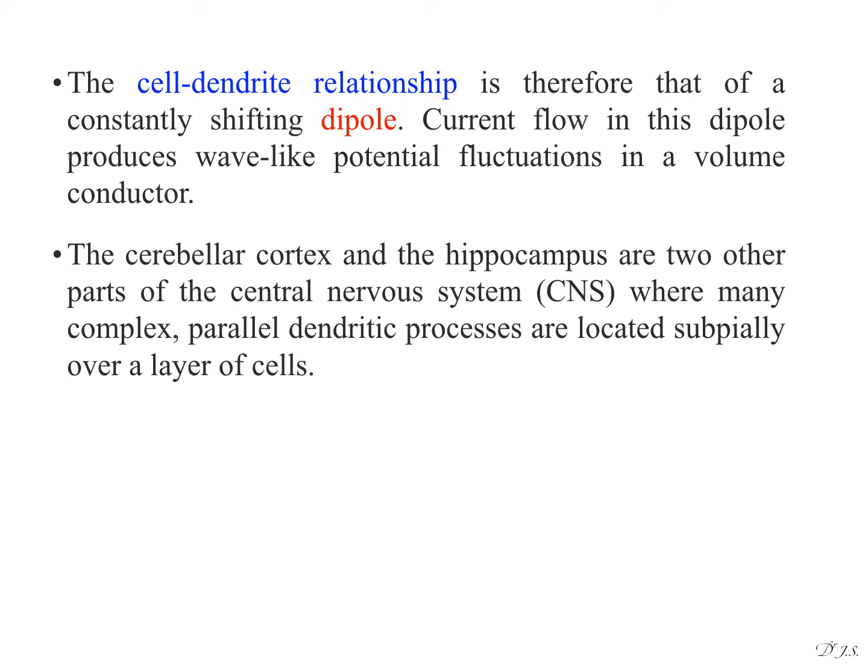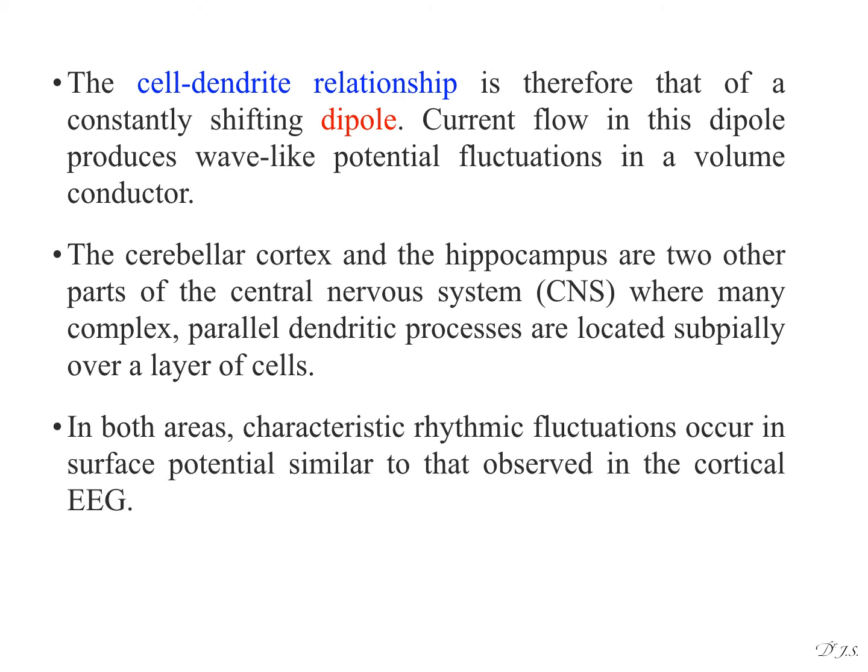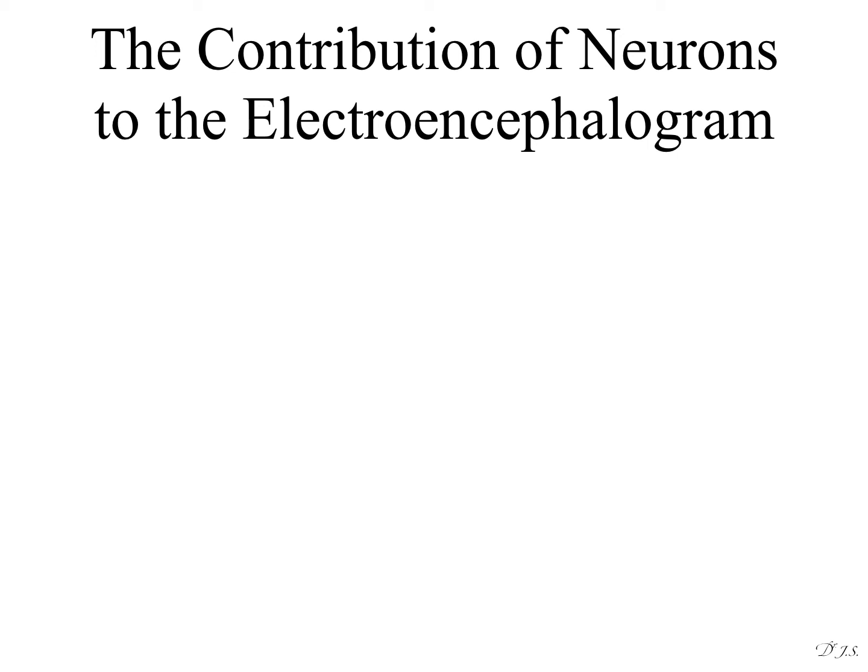The cerebellar cortex and the hippocampus are two other parts of the central nervous system where many are complex. Parallel dendritic processes are located superficially over a layer of cells. In both areas, characteristic rhythmic fluctuations occur in surface potential similar to that observed in the cortical EEG.